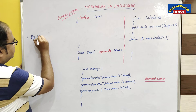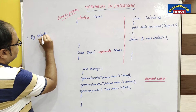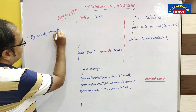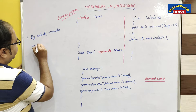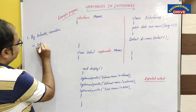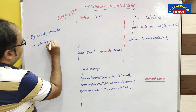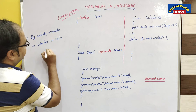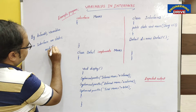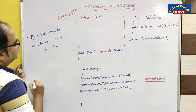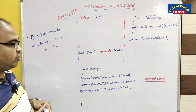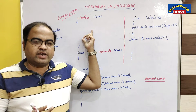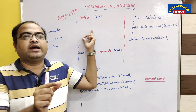By default, variables in interfaces are static and final. This is a very, very important point. Variables in interface are by default static and final. So whenever we are using variables in an interface, by default they will be static and final in nature.